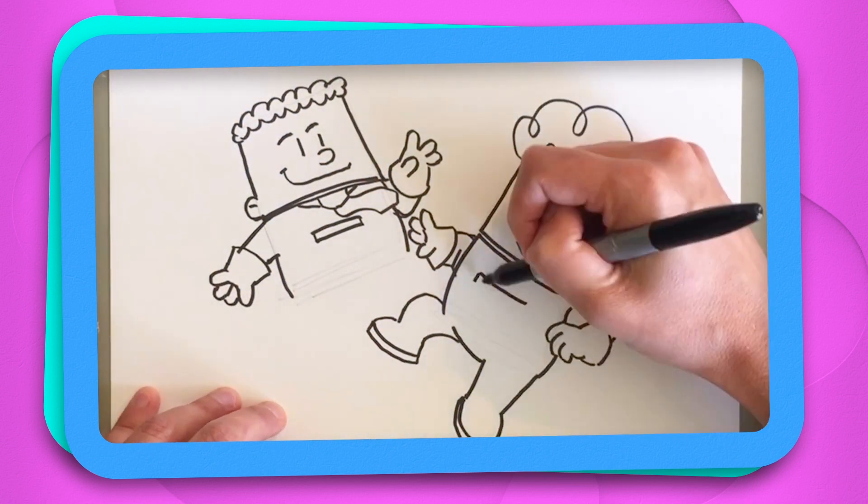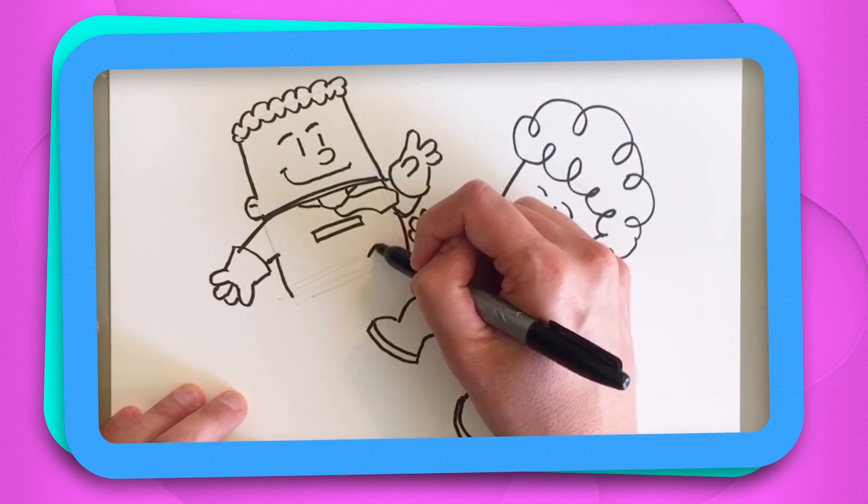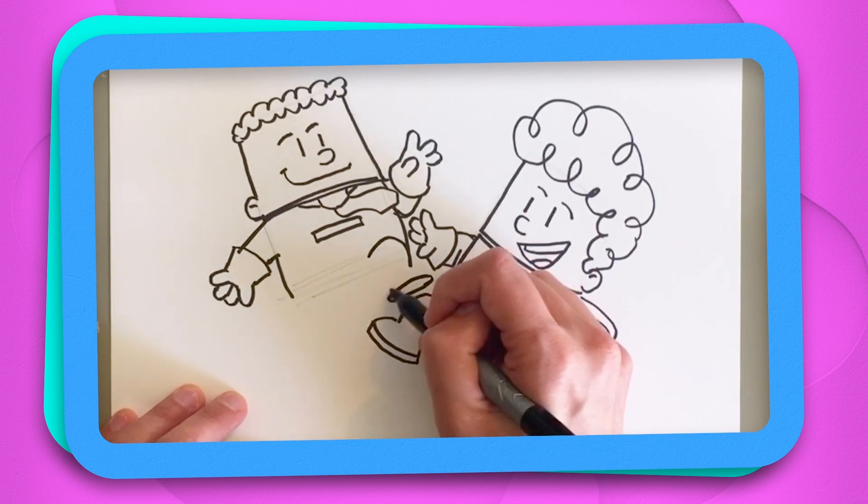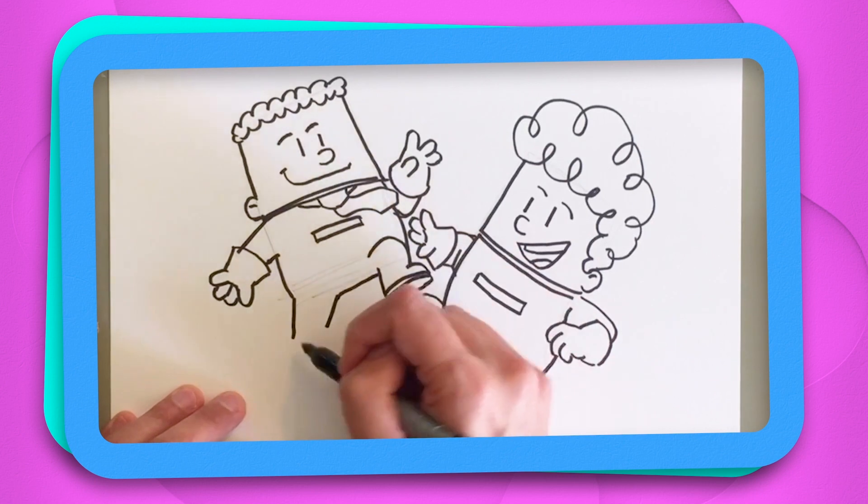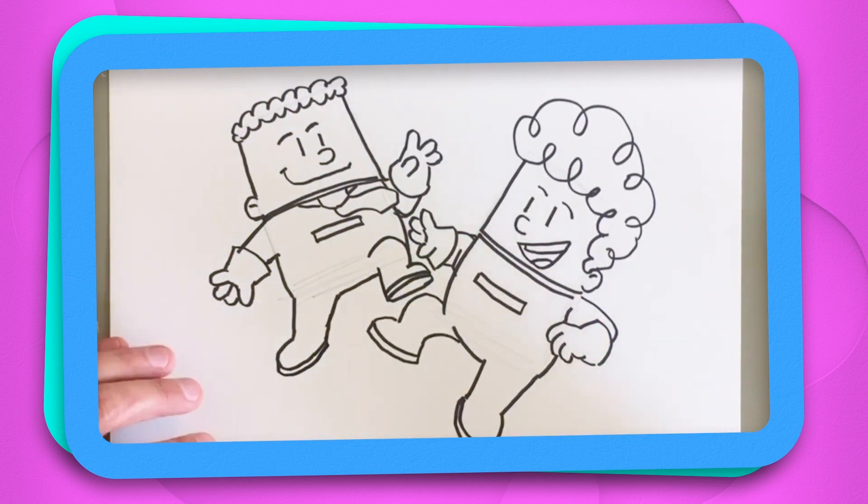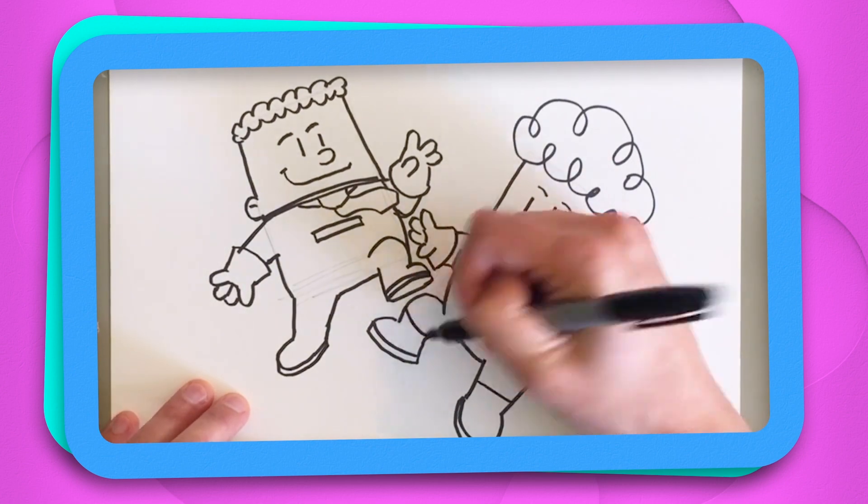Then he's also got this chest piece. For Harold, this leg's going to be kind of bent up. And then his other leg can be more straight out like this. We're going to give them some boots.